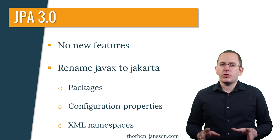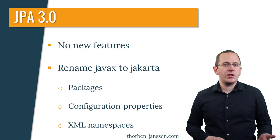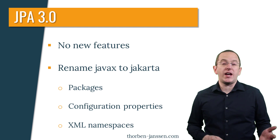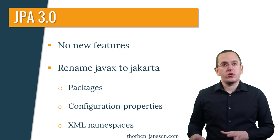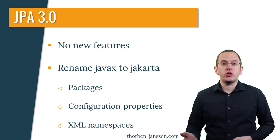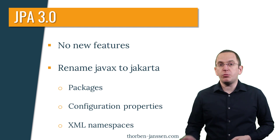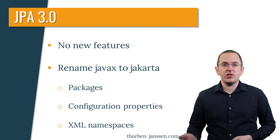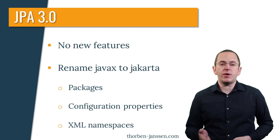If you take a closer look at JPA 3.0, it might seem like nothing has changed. And that's not entirely wrong. JPA 3.0 brings no new features. It only changes the prefix of all API classes' package names, the prefix of some configuration properties, and the schema namespaces for all XML-based configuration files.